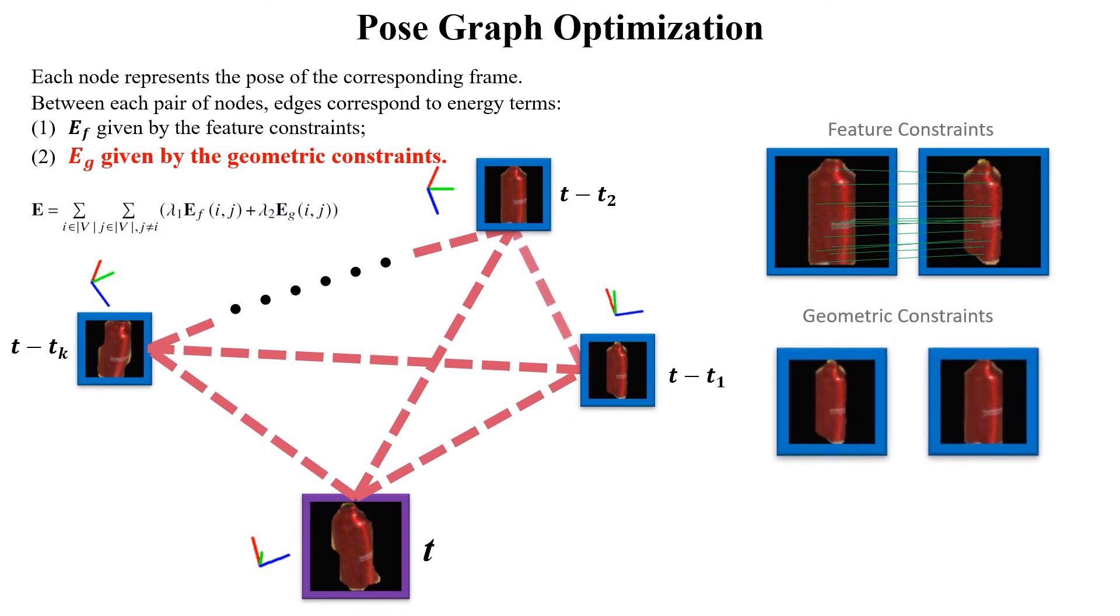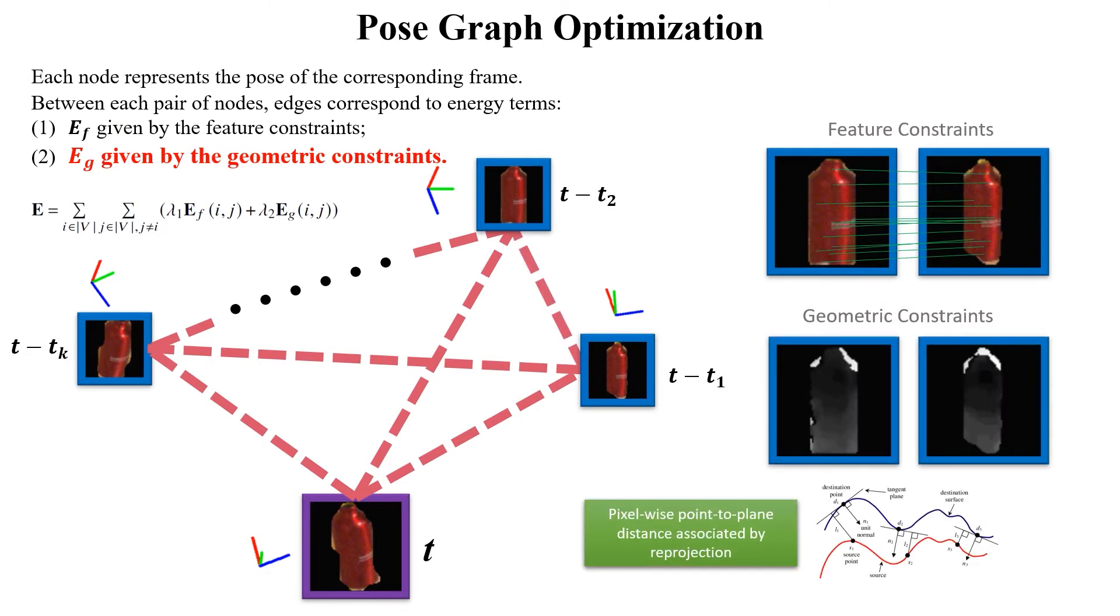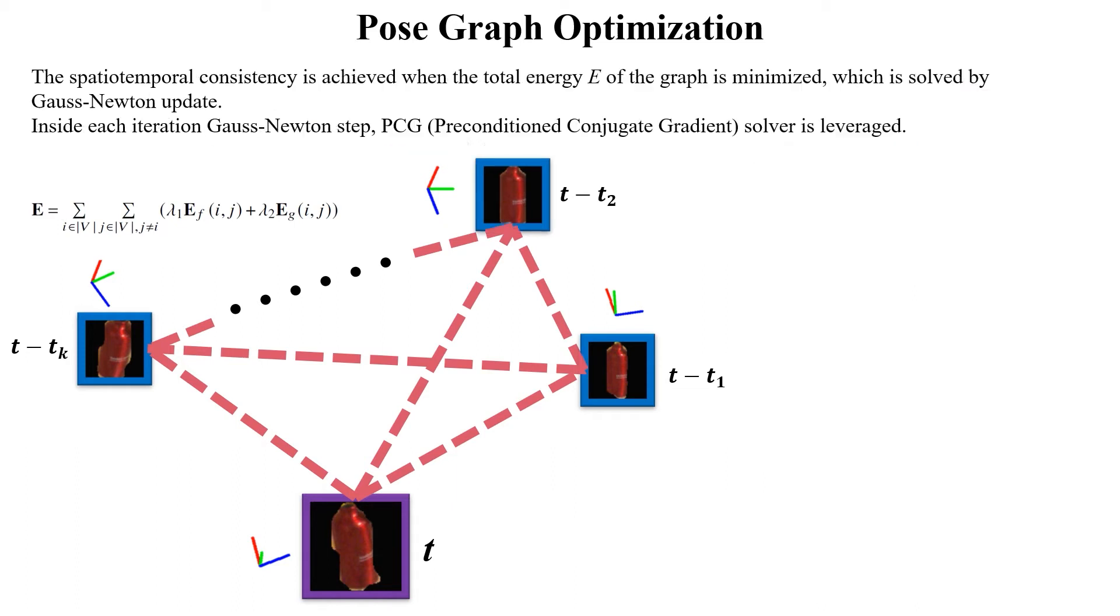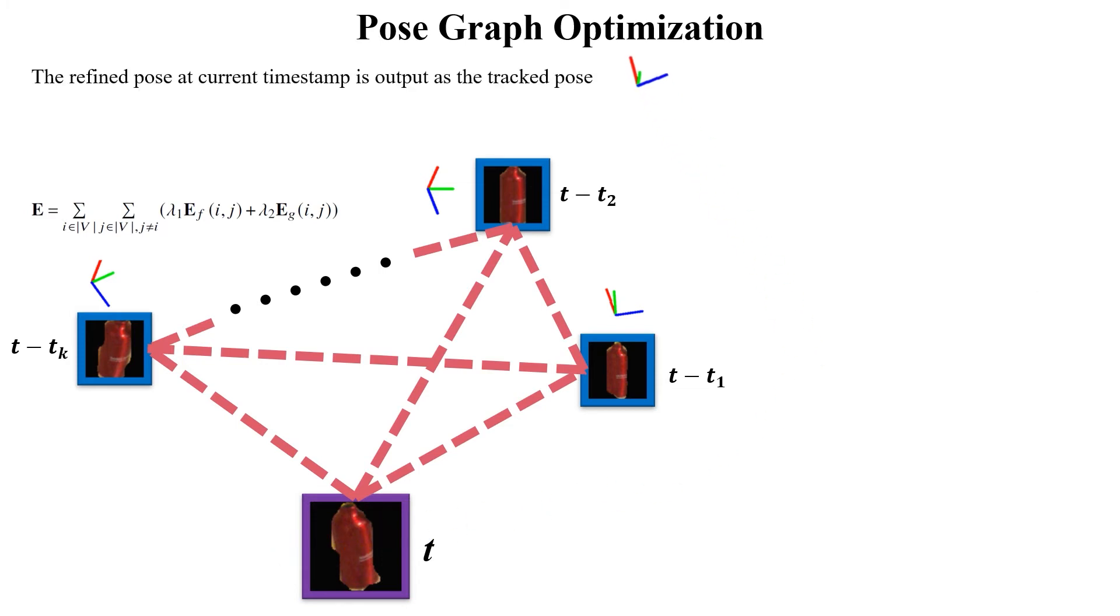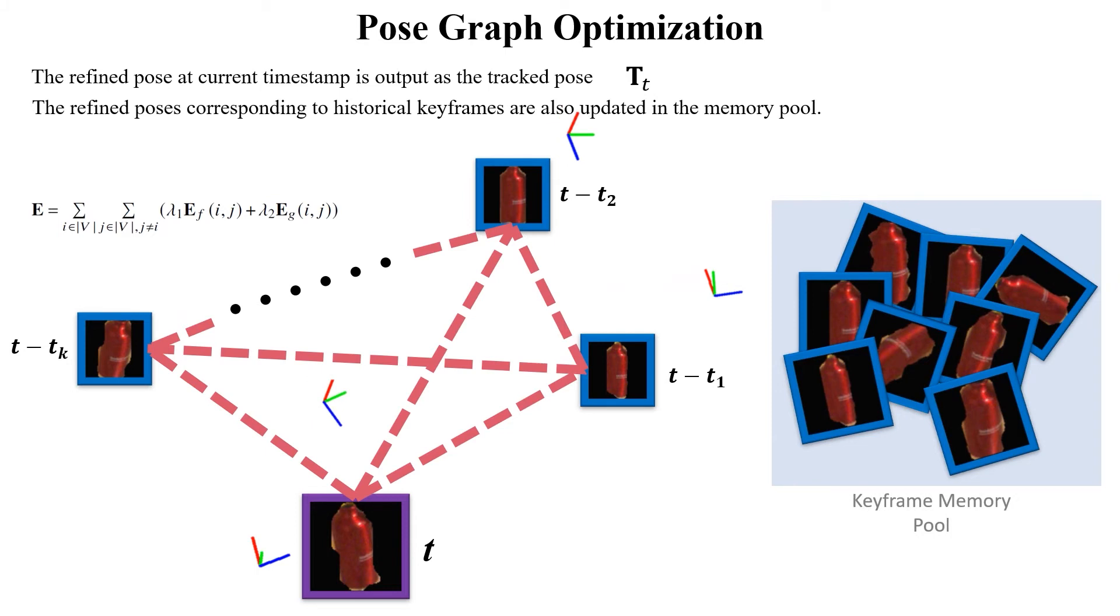Eg is given by the geometric constraints. In this work, pixel-wise point-to-plane distance is associated by reprojection. The spatial-temporal consistency is achieved when the total energy of the graph is minimized. The entire pose graph optimization is implemented in CUDA for parallel computation. The refined pose at the current timestamp is output as the tracked pose. The refined poses corresponding to historical frames are also updated in the memory pool.